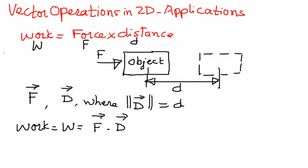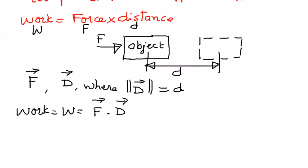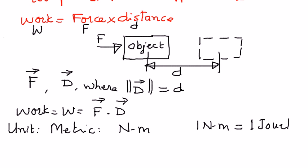When we talk about the work, we want to also talk about the units which we want to measure that in. Therefore, the units in metric units, work is measured in terms of newton meters. We know that one newton meter is equal to one joule.